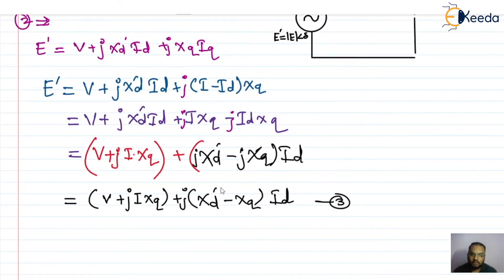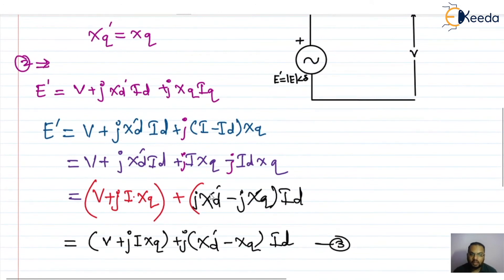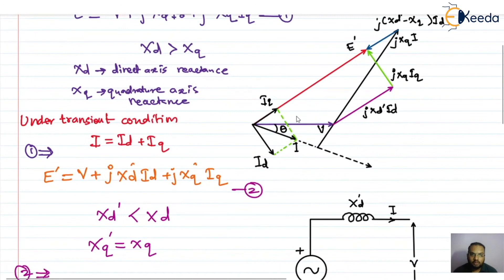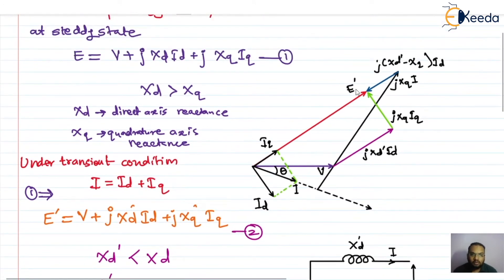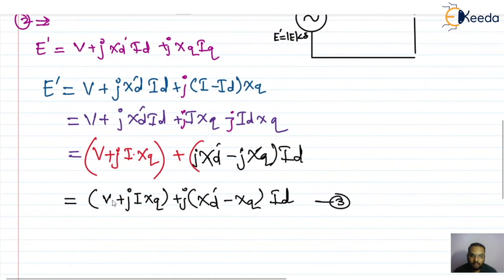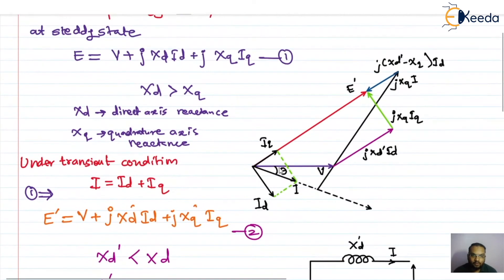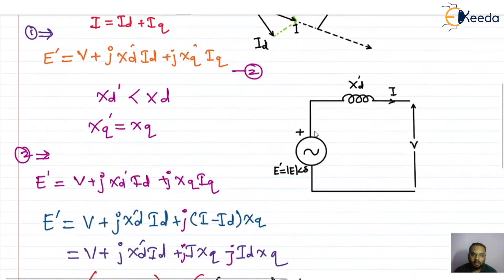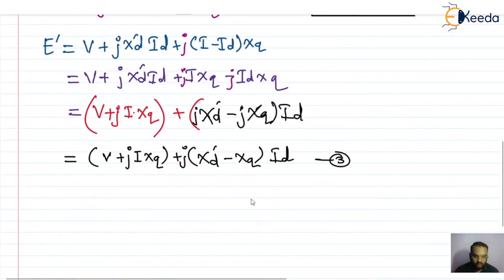Looking at equation number three, we can draw the phasor diagram for the simplified machine. E' is equal to V plus j·I·Xq plus j·(Xd' − Xq)·Id. This vector or phasor diagram can be drawn using equation number three, showing how the induced transient EMF E' is composed of terminal voltage V and the respective reactance voltage drops.